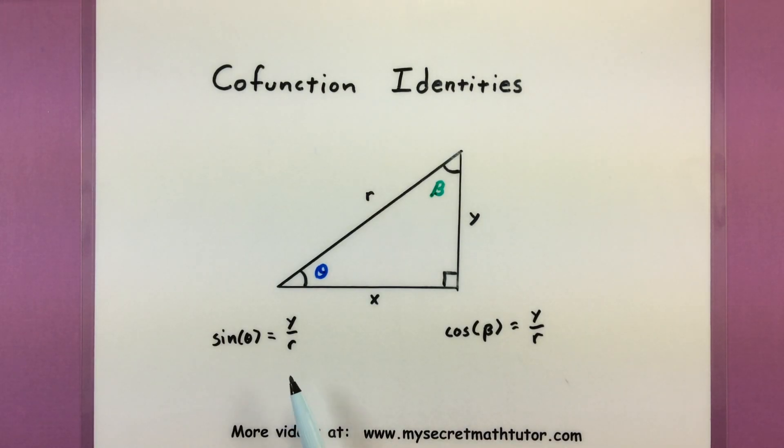Now notice how in both these instances, even though I use different trigonometric functions and different angles, I got the exact same value or the exact same ratio for sides. This is not an accident.